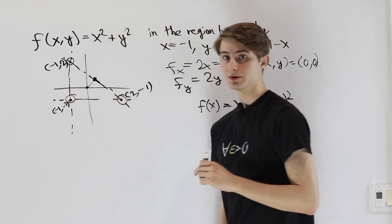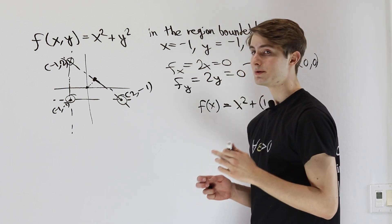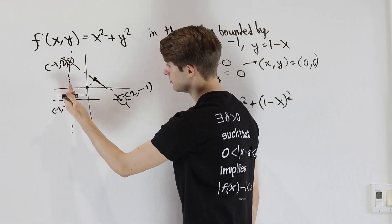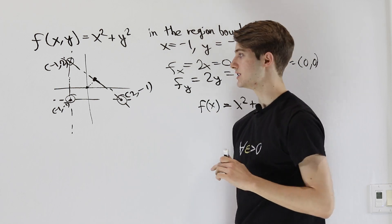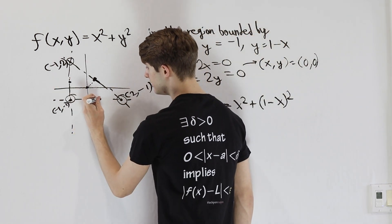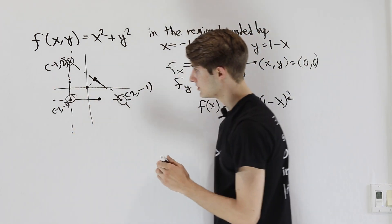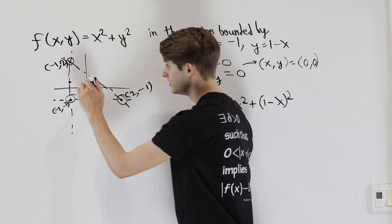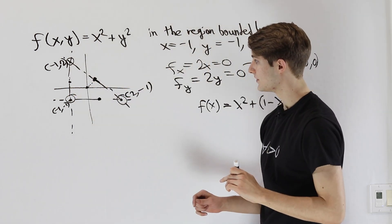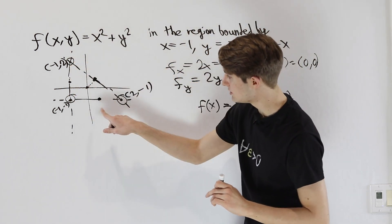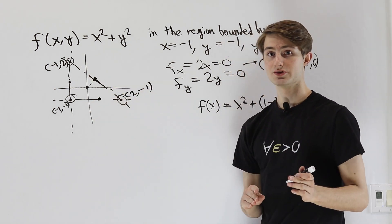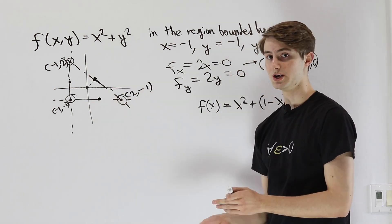We have these different points to check. Remember, we'd also have to check the boundary lines for x equals negative 1 and y equals negative 1. Once we have all of those points, we can check the critical values of our original function, the critical points along the boundaries, and all of the corners. Whichever one is the smallest will be our minimum, and whichever one is the largest will be our maximum.